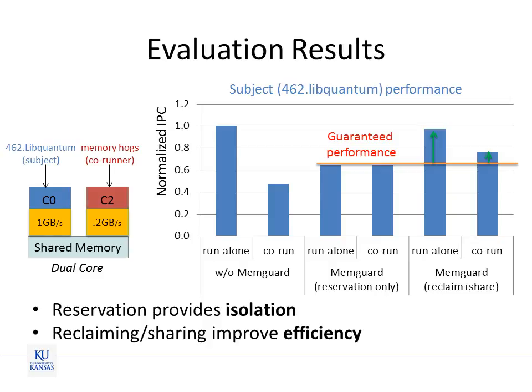While more details can be found in the article, let me briefly describe the effectiveness of the techniques in providing performance isolation and efficiency. In this experiment, we measure the performance of a subject benchmark with and without a memory-intensive co-runner. As you can see, without using MemGuard, the subject benchmarks suffer significant performance degradation due to the co-runner. However, with MemGuard reservation, we can guarantee the performance of the subject benchmark regardless of the co-runner. Also, with reclaiming and sharing, performance of the subject benchmark is further improved while still respecting the guaranteed performance.